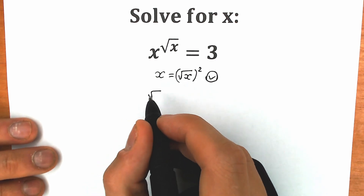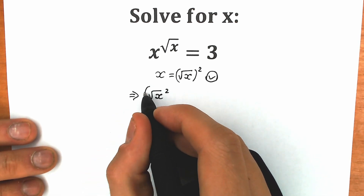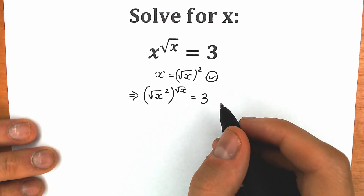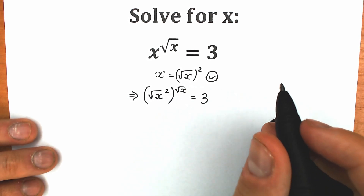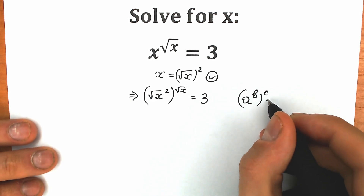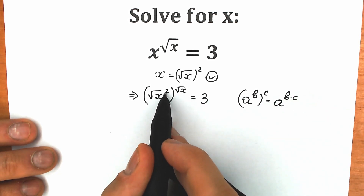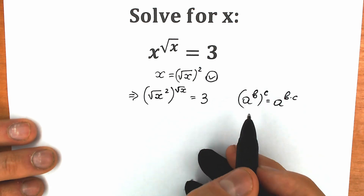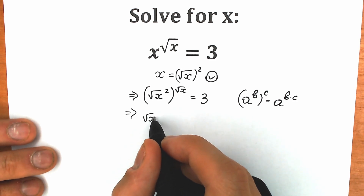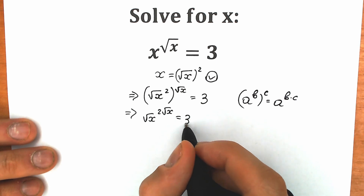As a result we have right here square root of x, and we have square root of x to the second power. We're going to raise this to the power square root of x, equal to 3. Now we need to remember a really easy school algebra property: when we have a to the power b, raised to the power c, we get a to the power b times c. As a result we will have square root of x to the power 2 times square root of x, equal to 3.